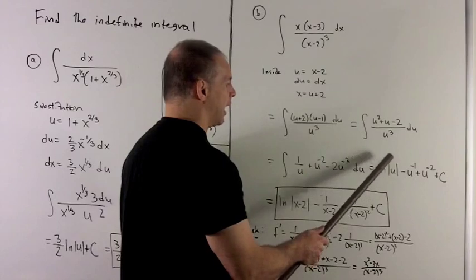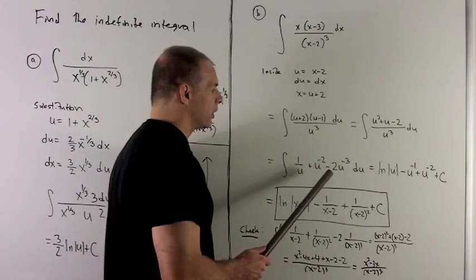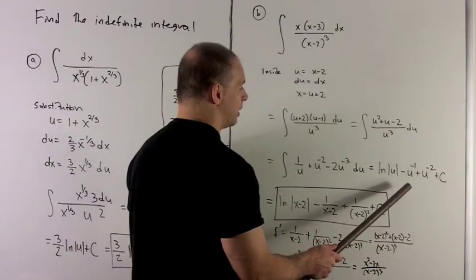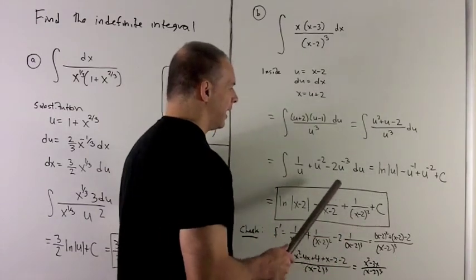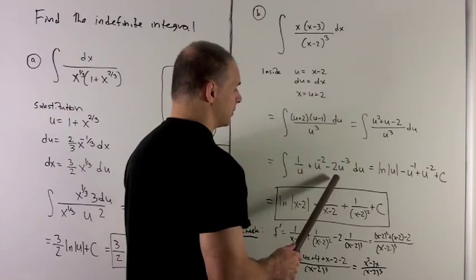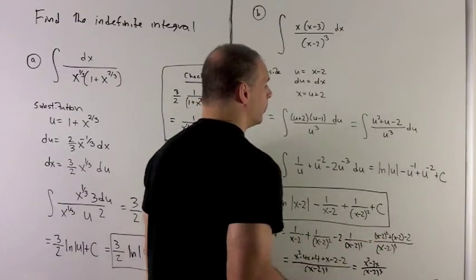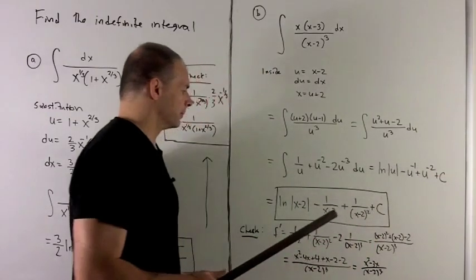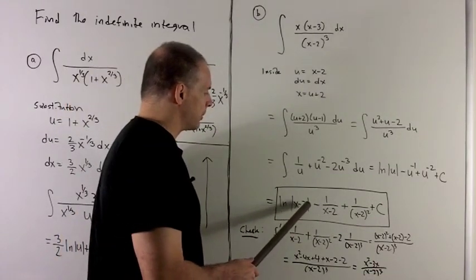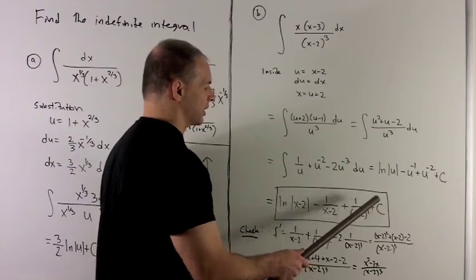Now I take the antiderivative of each term. The antiderivative of 1 over u is natural log of absolute value of u. For u to the minus 2, I add 1 and flip it over, giving u to the minus 1; flipping over a minus 1 is the same as multiplying by minus 1. For the last term, I add 1 giving minus 2, then flip over the minus 2, which turns it into a 1, so I get plus u to the minus 2. I throw in the constant. Putting x minus 2 back in for u gives natural log of |x minus 2| minus 1 over (x minus 2) plus 1 over (x minus 2) squared plus a constant.